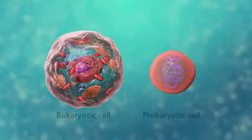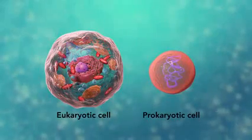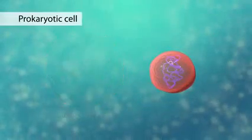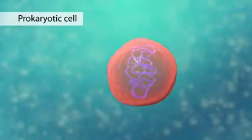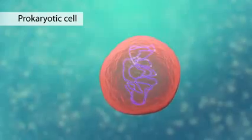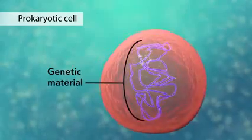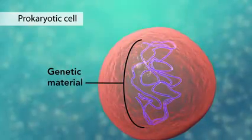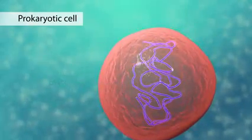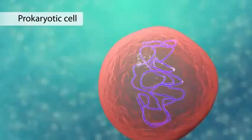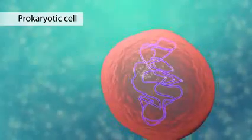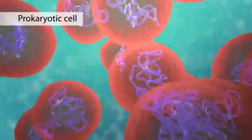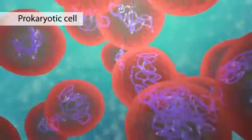The second category is prokaryotic cells. They don't have a nucleus or membrane-enclosed organelles. They do have genetic material, but it's not contained within a nucleus. Prokaryotic cells are always one-celled or unicellular organisms, such as bacteria.